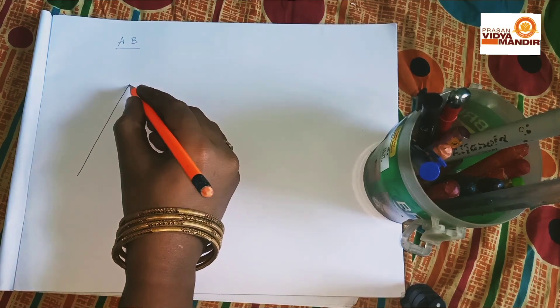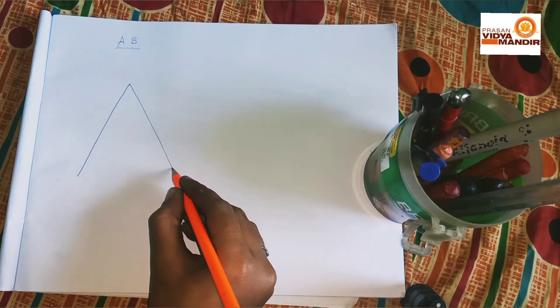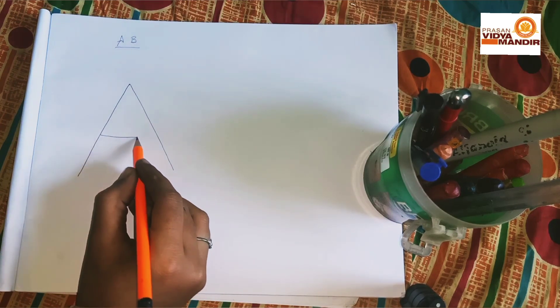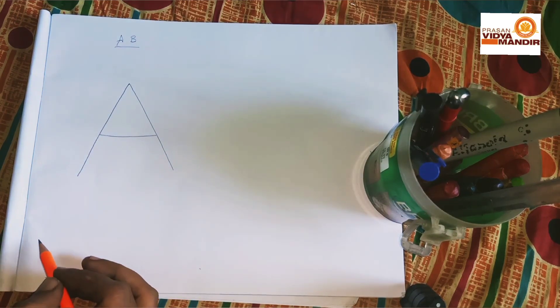Draw the alphabet A like this. Children, you can draw very big size. Then close it with a curved line.